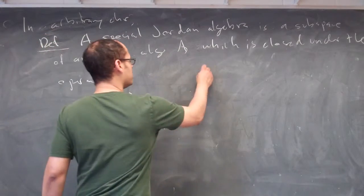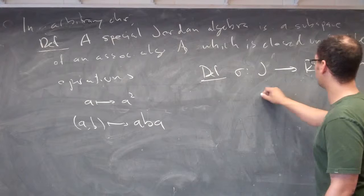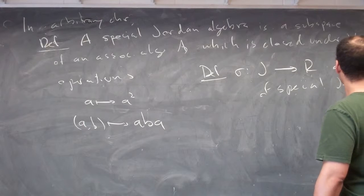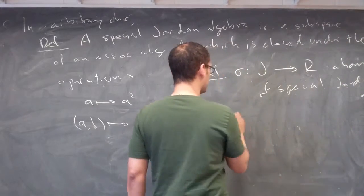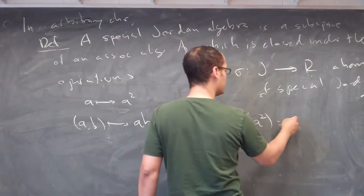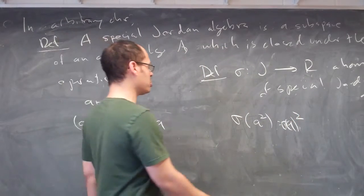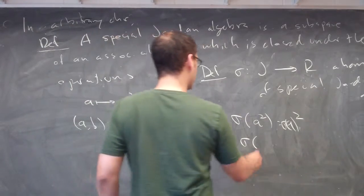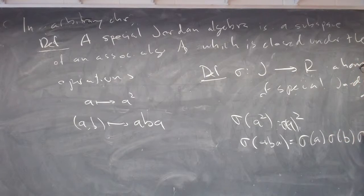One can define a homomorphism of special Jordan algebras to be a function from one special Jordan algebra to another which satisfies: sigma of the square is the square after doing sigma — so it preserves squaring. It also preserves the ABA operation: sigma of ABA should equal sigma(A) sigma(B) sigma(A).